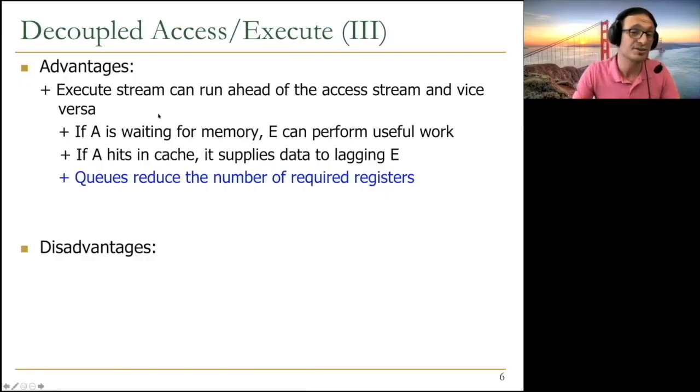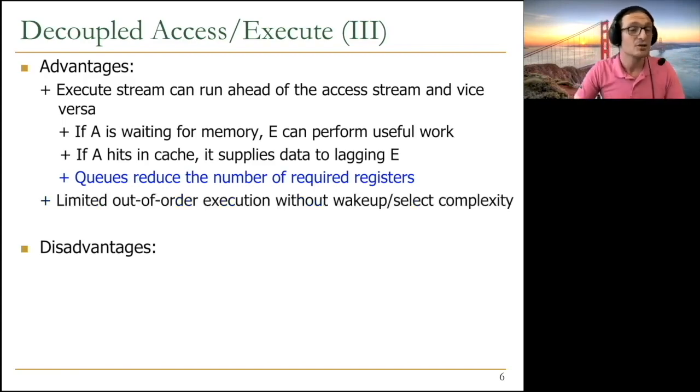The big advantage is the execute stream can run ahead of the access stream and vice versa. If the access processor is waiting for memory, the execute processor can perform useful work. If the access processor hits in the cache and it's not waiting for memory, it supplies the data to the lagging execute processor. Usually the memory accesses take longer, so usually execute can perform useful work, independent instructions, while the access processor is waiting. The key idea is queues reduce the number of required registers. You don't have to have thousands of registers or internal registers like physical registers in an out-of-order engine. You have limited out-of-order execution without the wake-up and select complexity and without large physical register files.